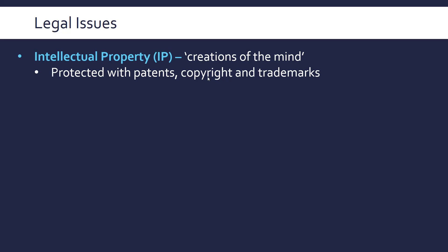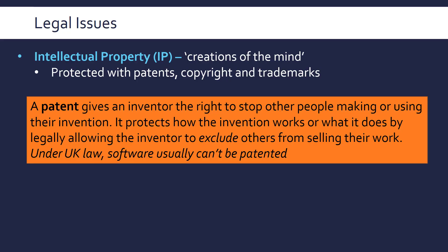A less clear-cut legal issue is intellectual property rights. The very vague legal definition is that they're creations of the mind — things like inventions, a new algorithm, a new piece of software. You can protect them with patents, copyright, and trademarks. Patents and copyright are more for the actual product itself, whereas trademarks are more for marketing the product with the brand. A patent is a legal document that gives an inventor the right to stop other people making or using their invention. You have to apply for it from the government, and under UK law, software usually can't be patented.